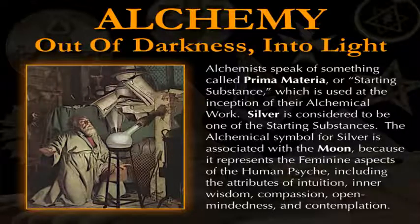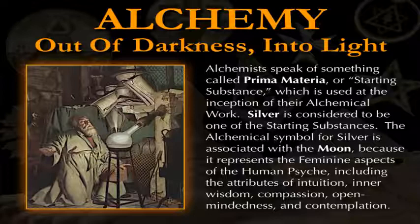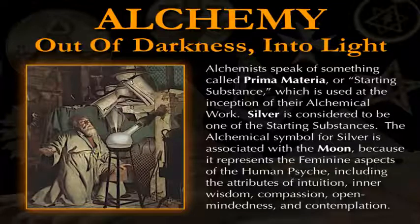Because silver represented, in alchemy, the feminine aspects of the human psyche, including the attributes of intuition, inner wisdom, compassion, open-mindedness, and contemplation. And that's what you need to begin. You need that sense of open-mindedness, of desire, of willing to learn, willing to open yourself up and receive. The truth is always out there, but we have to be open to receive it. That's a feminine quality. It's absolutely essential and central to the tradition of Kabbalah, which we're going to talk about momentarily, which means reception.